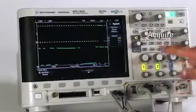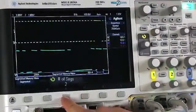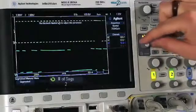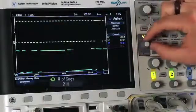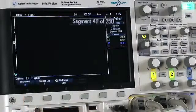Press the Acquire front panel key, tap the Segmented key, and press Number of Segs. Set the value to 250 by dialing the Entry knob. Press the Segmented key to begin Segmented acquisition.